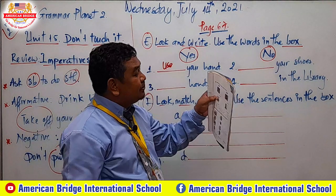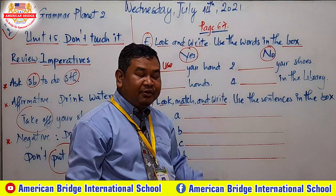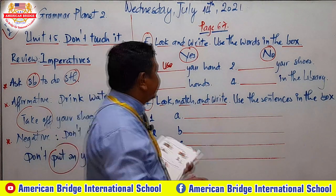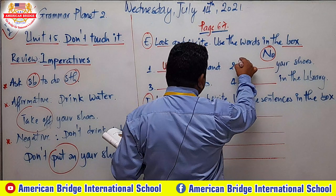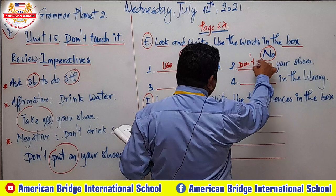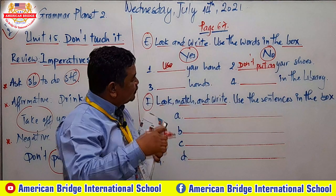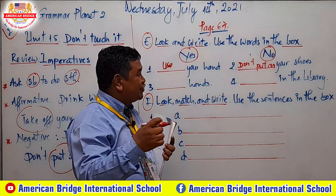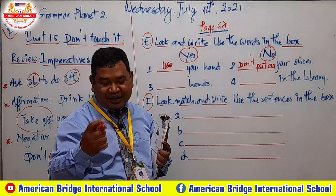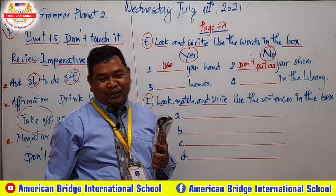Number two: the boy is taking off his shoe. So if we say 'no,' it means 'don't.' Don't — don't what? This one says 'don't put on your shoe.' 'Don't put on your shoe' means 'take off your shoe.' This one is an order or command.